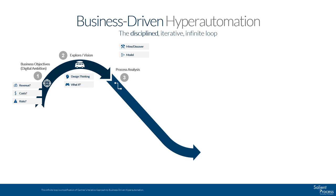Also, this is where you will want to simulate scenarios to see what happens as you make changes to your processes. What happens if instead of manually sorting through invoices, I have a document ingestion engine doing that? What happens if I have bots take over certain rote and mundane work? You can use Salient's DBA-SIM tool to help with this analysis. You can go to our website at salientprocess.com for more information.